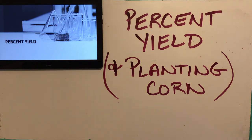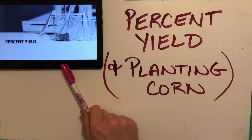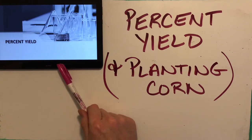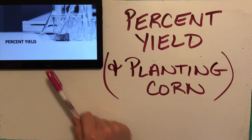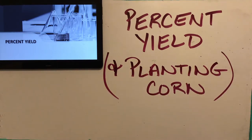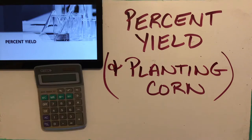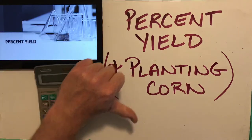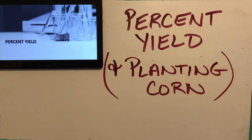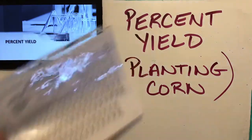Alright, Chem 11 - our next topic, and the final topic in our quantitative chemistry unit, is percent yield. We're also going to talk about planting corn today. Same format as usual: the brand new PowerPoint lecture notes for percent yield are on your D2L site. You'll need your calculator and your periodic table because we are going to do some sample problems in the presentation today.